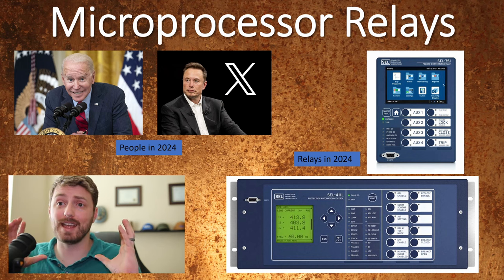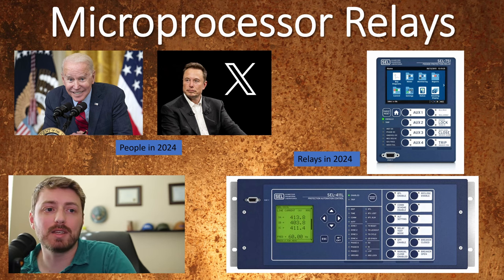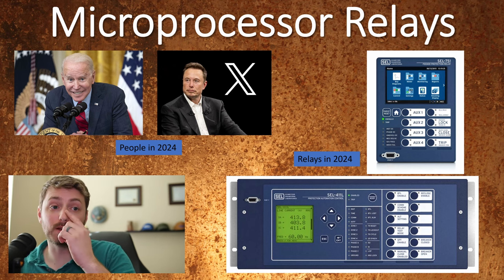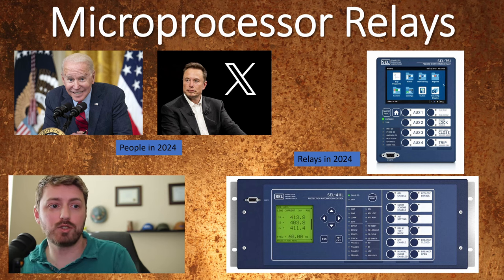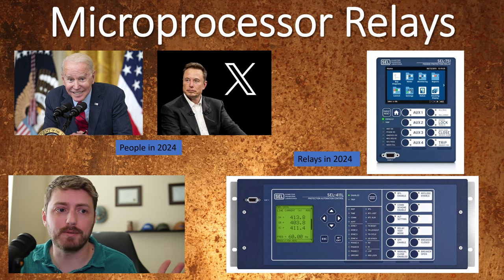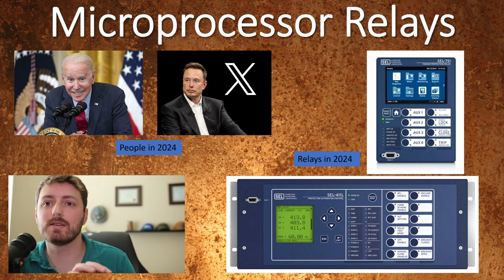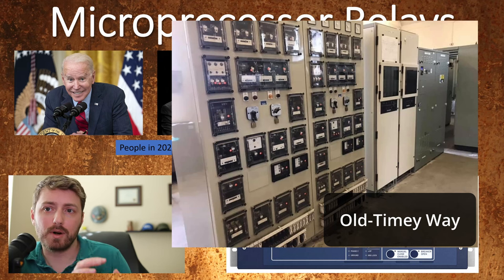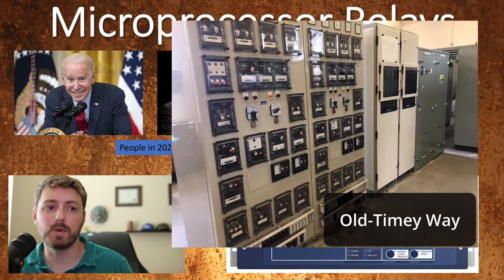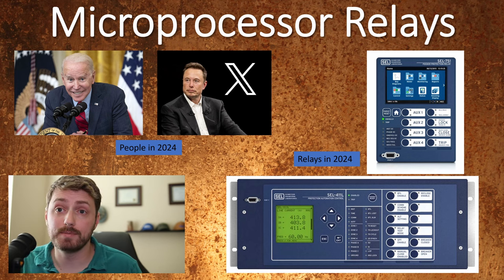That brings us to today and relays that are essentially amped-up PCs designed to protect our grid. The modern microprocessor-based multi-function protection relay is massively powerful. Secure and high-speed communications are baked right into the protection relays, meaning we can get real-time monitoring data straight from the horse's mouth, or get cheeky and use the trip and close functions for automated control of substations and breakers. Due to the massive increase in processing power, we can cram dozens of protection functions into one little box instead of having one protection function per box per phase. For the same level of protection offered by a wall of electromechanical or solid-state relays, we can use a single multi-function relay like the 751 or one of these 411s.